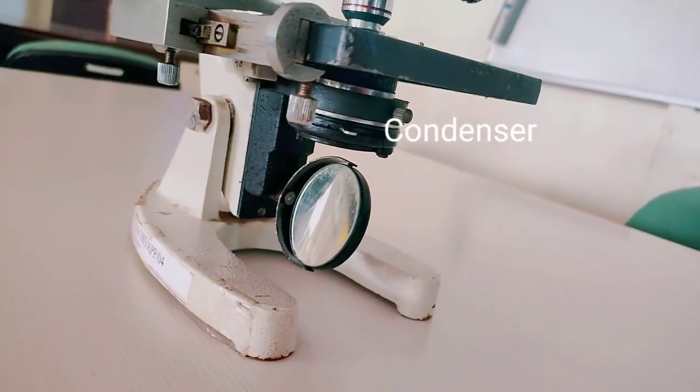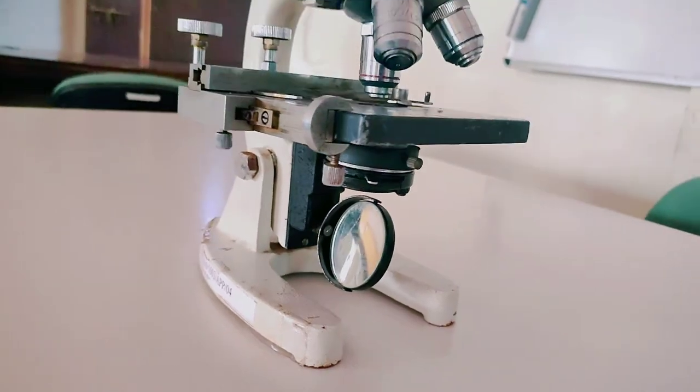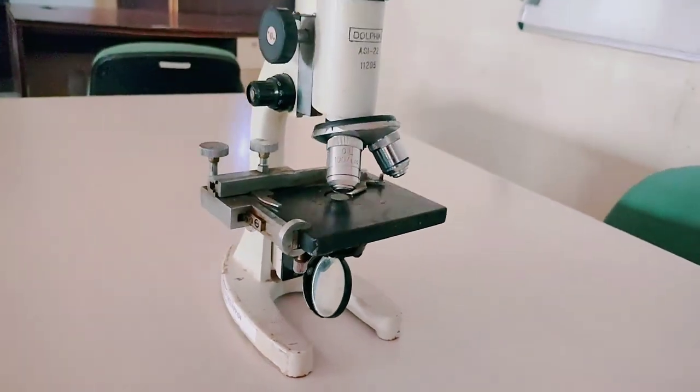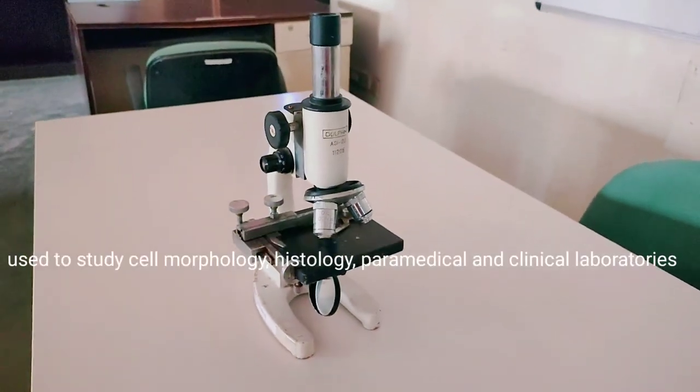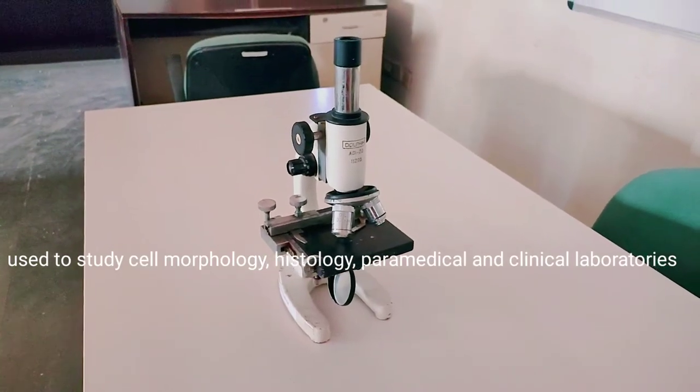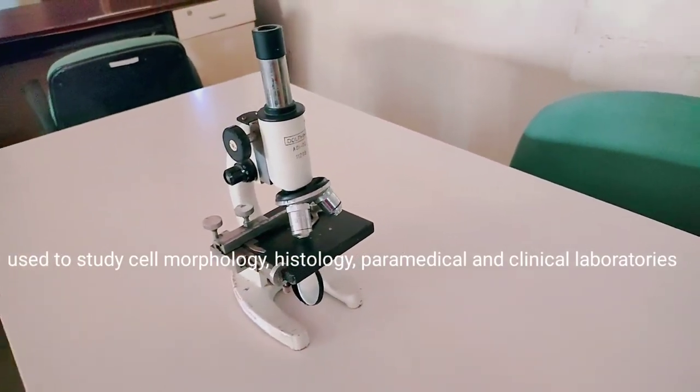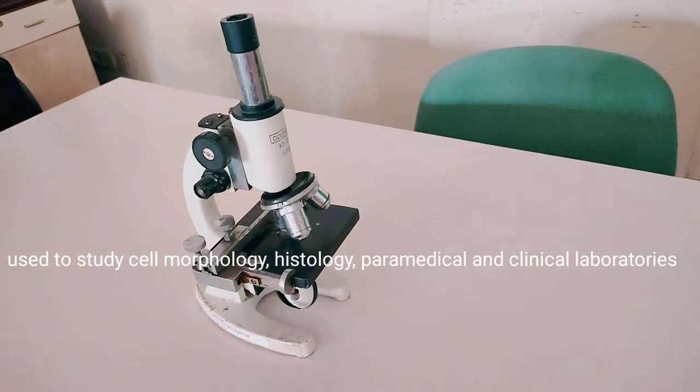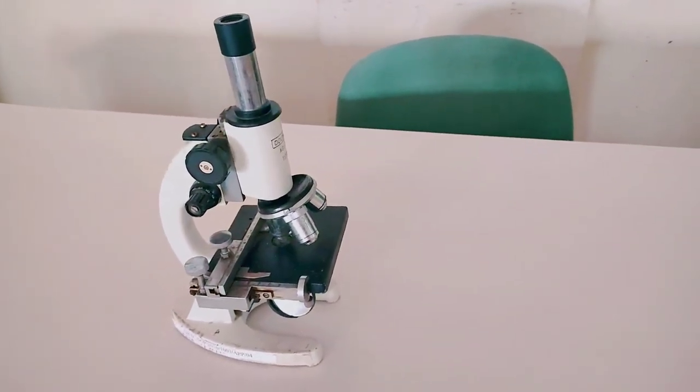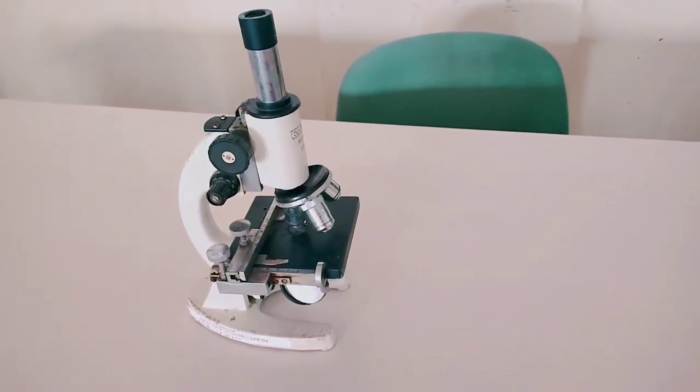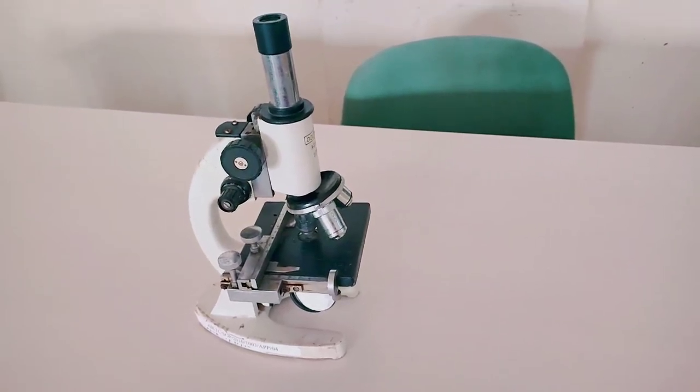The compound microscope is used to study cell morphology, histology, paramedical and clinical laboratories. A microscope helps us to see microscopic objects that are too small and invisible to see with the naked eye.